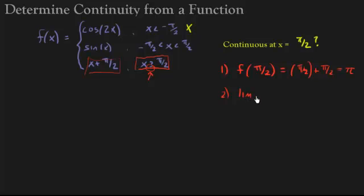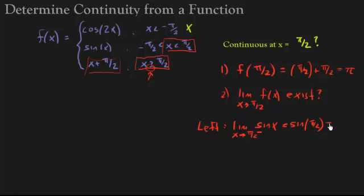Alright, so let's move on to the next one. Does the limit as x approaches π/2 exist? Now because it's a piecewise function, I have to look at both the left and right hand limits. So let's take a look at the left. That's the limit as x approaches positive π/2. And now I need to know which function I'm using. So where am I to the left of π/2? And that would be in here, right? Slightly to the left of π/2. So I'm using this function. And now I'm just going to plug in π/2. And sine of π/2 is 1.